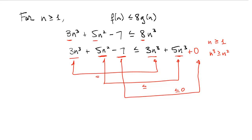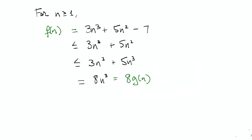We will show a sequence of inequalities, and in each inequality we replace a term from the expression on the left with a term from the expression on the right. Each substitution will cause the expression to stay the same or get larger. Here is a sequence of inequalities that proves the fact we want to show.